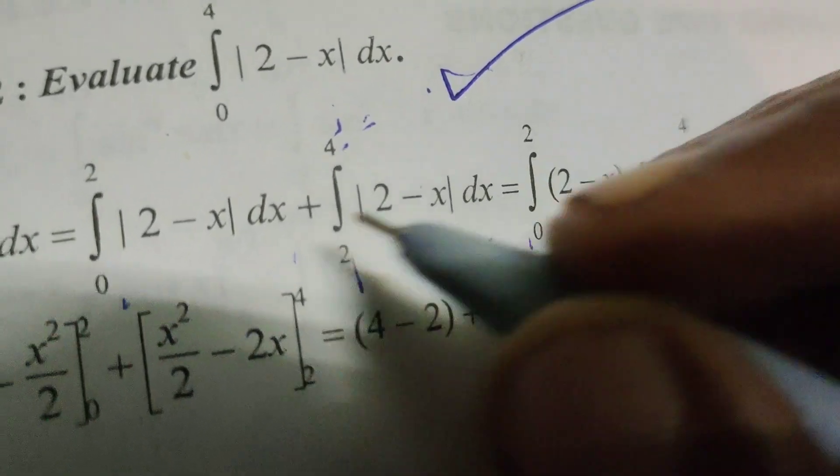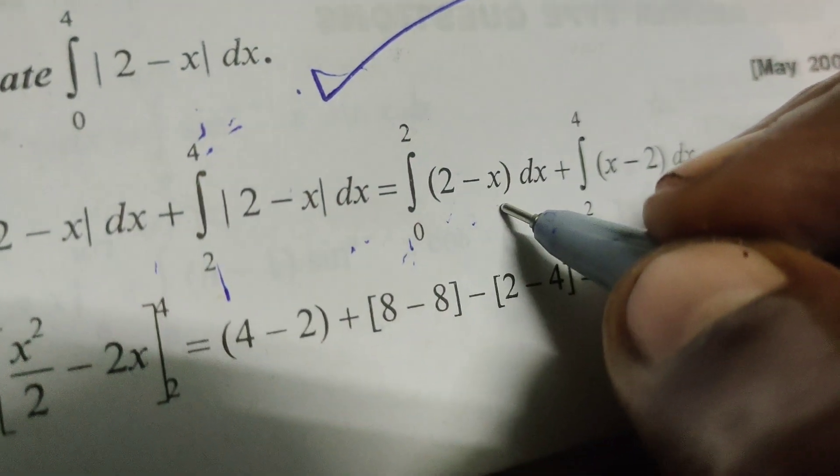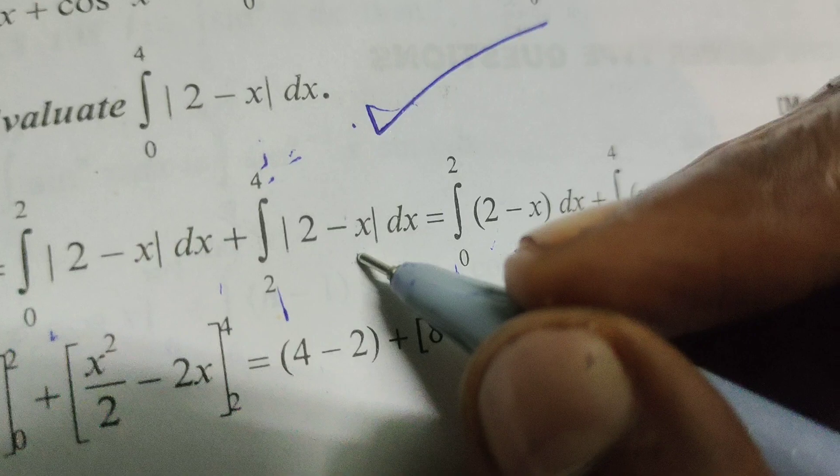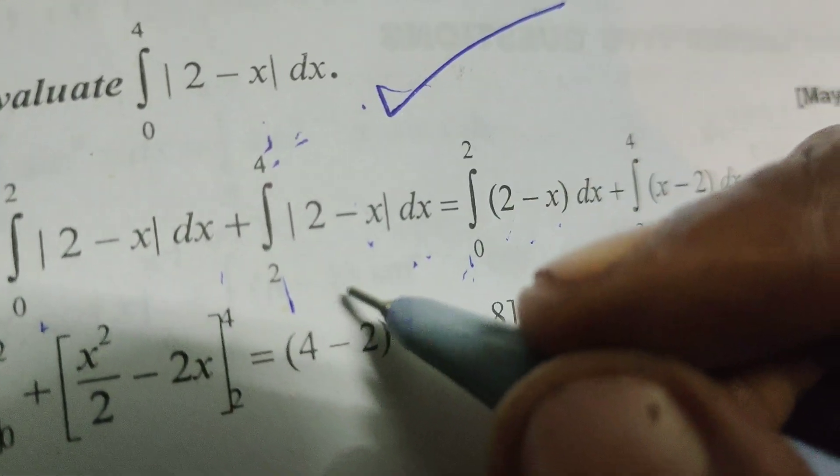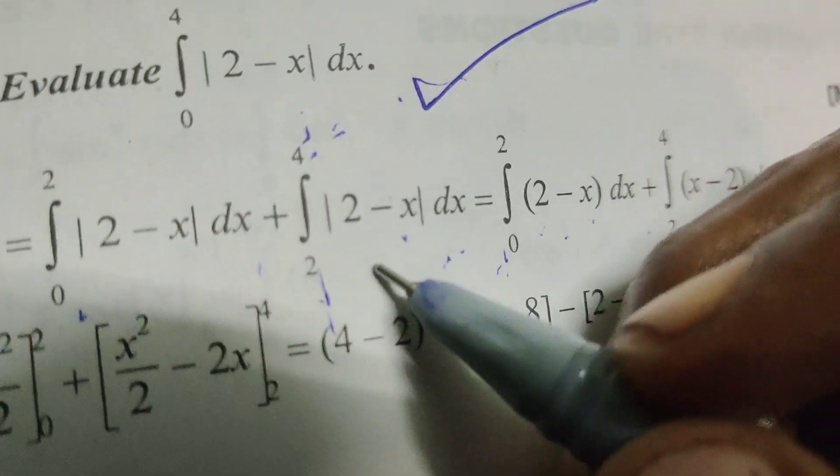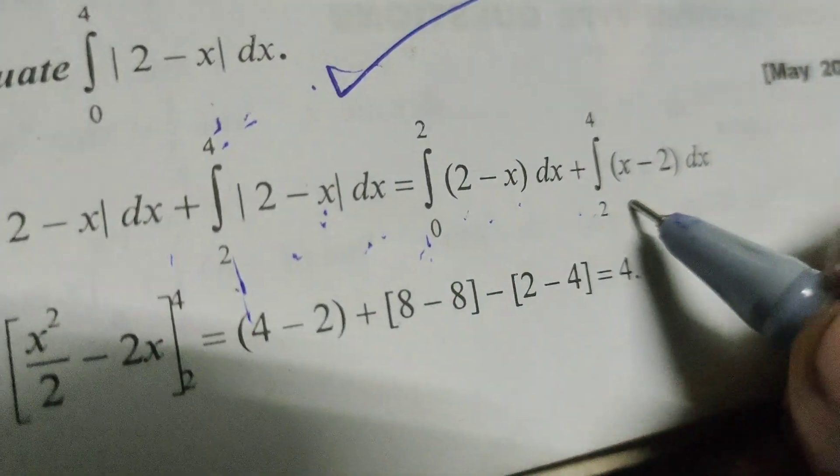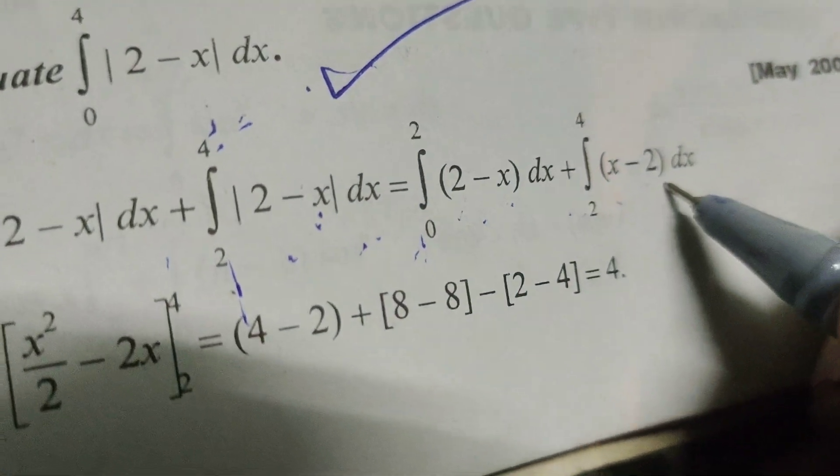For the interval 0 to 2, the modulus becomes 2 - x. For the interval 2 to 4, the modulus becomes x - 2. So we have integral from 0 to 2 of (2 - x) dx plus integral from 2 to 4 of (x - 2) dx.